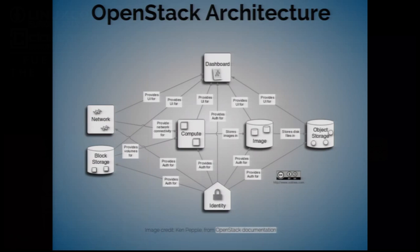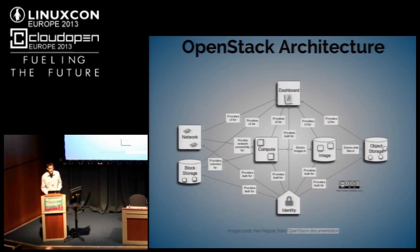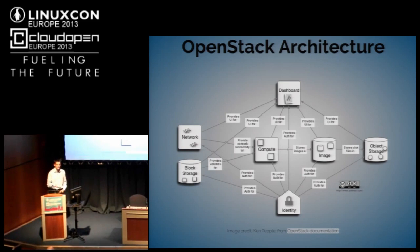Can I have a show of hands? Who here is familiar with OpenStack in the sense that they have looked at or deployed an OpenStack instance in production or testing? Quite a few. The rest are complete OpenStack novices. So, a quick, very brief overview of the OpenStack architecture. OpenStack is comprised of a set of services, all under the ASL 2.0 license, all written in Python, and all working together using RESTful JSON APIs.